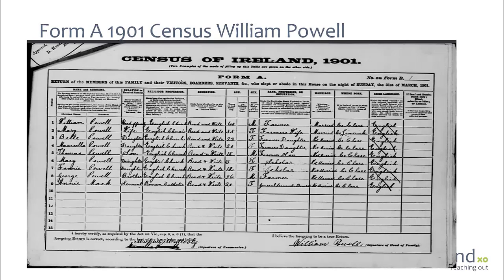Michael Mullooly is the man who wrote up this form. These censuses were often enumerated by members of the RIC or local constabulary, because they'd be fairly familiar with the area and with the families. One thing to be aware of is that some enumerators were not familiar with Irish spellings, so names can be misspelled — even a townland name can be misspelled if you're searching for it.